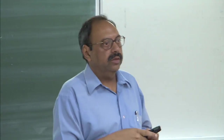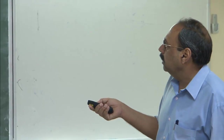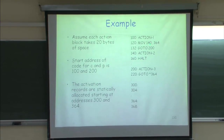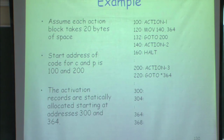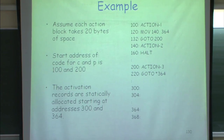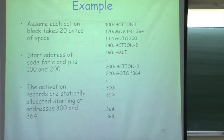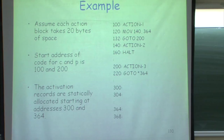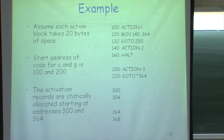Besides saving the return address, there are also instructions for saving machine status. After the move, we also need instructions for setting up the activation record, setting up access links, and allocating local variables. All of these are part of the call sequence.